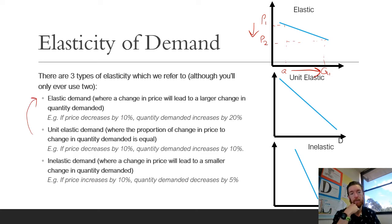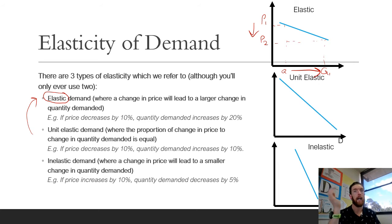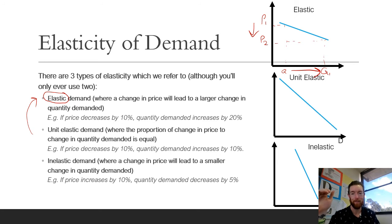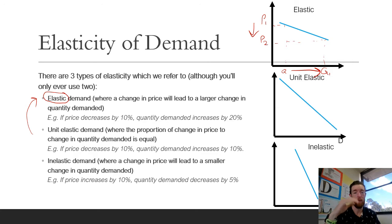Going back to elastic demand — when we get into the factors that affect elasticity, elastic demand tends to be more for things that are luxuries. When things are a luxury, they tend to be more elastic because you don't need to buy it, so a change in price affects your decision making a lot more. For example, muffins are a treat — if a muffin is $5 at Muffin Break, you might think twice, but if they drop in price you're going to start demanding more because it's cheaper.